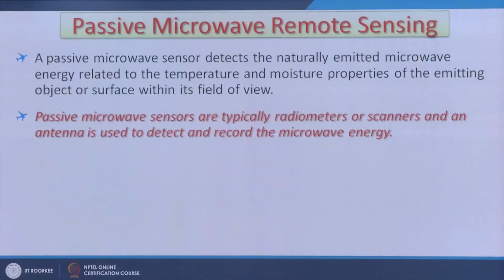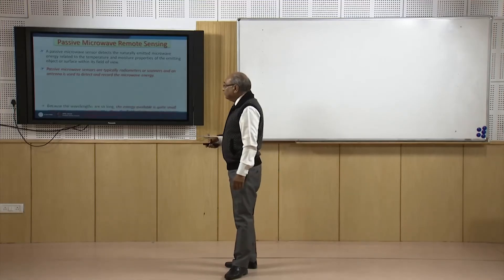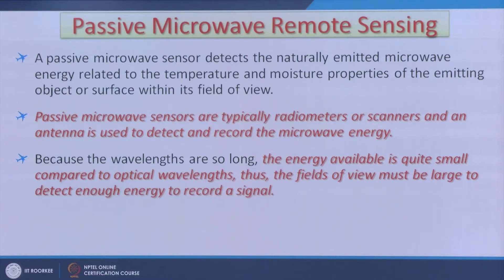Passive microwave sensors are typically radiometers and scanners; an antenna is used to detect and record microwave energy. But this energy is so small that high-resolution passive microwave images cannot be generated easily. Therefore, in order to get sufficient energy to reach the satellite, a large area must be involved, which means compromising on spatial resolution.